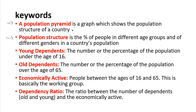Population structure is the percentage of people in different age groups and of different gender in a country's population. Young dependent is the number or percentage of population under the age of 16. Old dependent is the number or percentage of population over the age of 65.